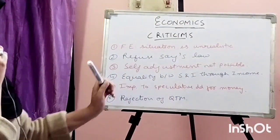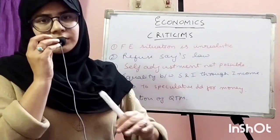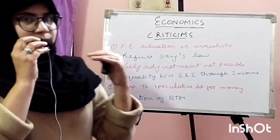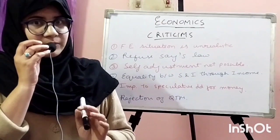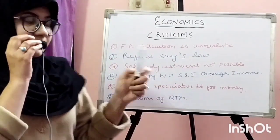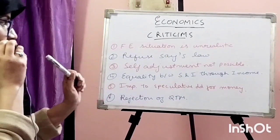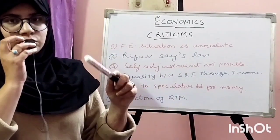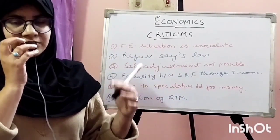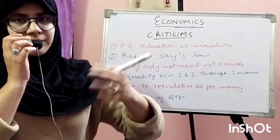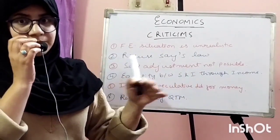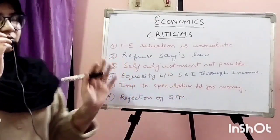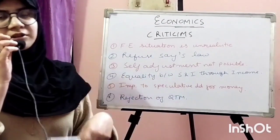The last criticism is the rejection of QTM. Keynes refused the Quantity Theory of Money, which said that changes in money supply only change prices while output and employment remain constant. Keynes argued this is not so, because if people deposit money in banks, money supply will vary, investment will vary, demand will vary, and so output will also vary. These are the criticisms of the classical theory of employment, which Keynes highly criticized.